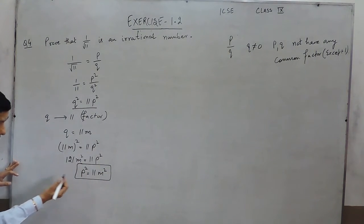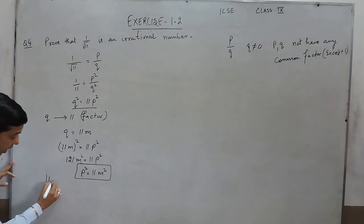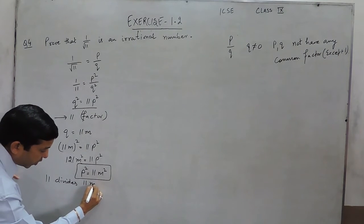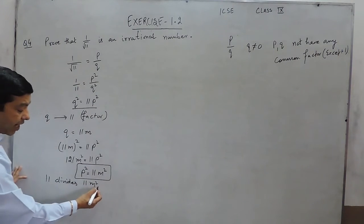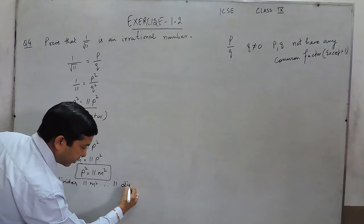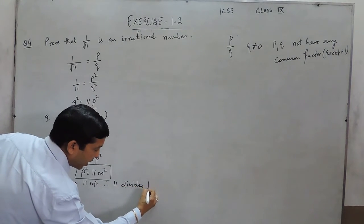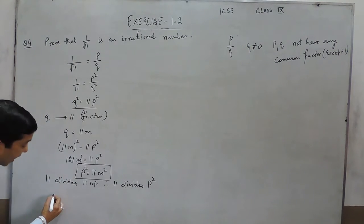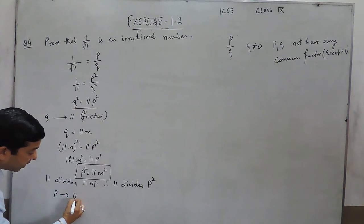If we see this as an equation, then 11M square is divisible by 11, or 11 divides 11M square. If 11 divides 11M square, that means 11 also divides P square. And when 11 divides P square, it means that P also has a factor 11.